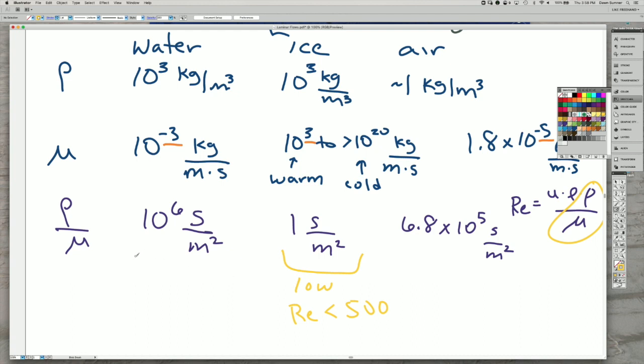So if we look at water, 10 to the sixth is 1,000,000. And so almost always this is high enough that usually the Reynolds number is greater than 2,000. However, the Reynolds number does depend on the flow speed.